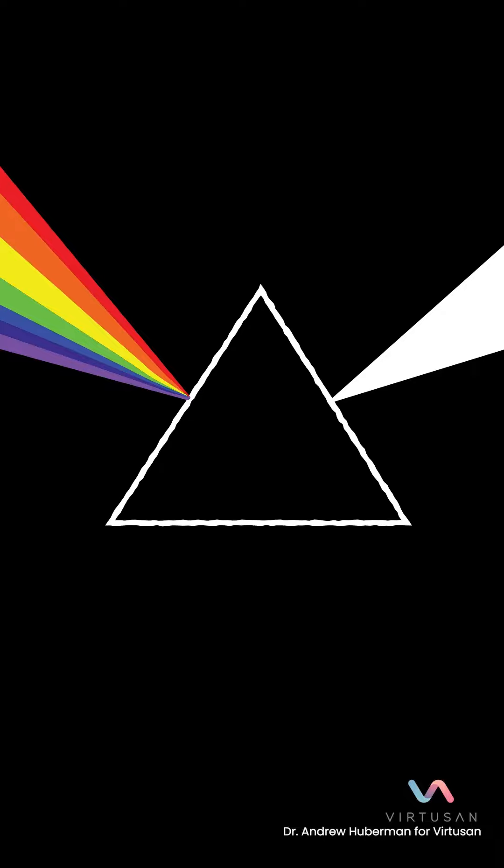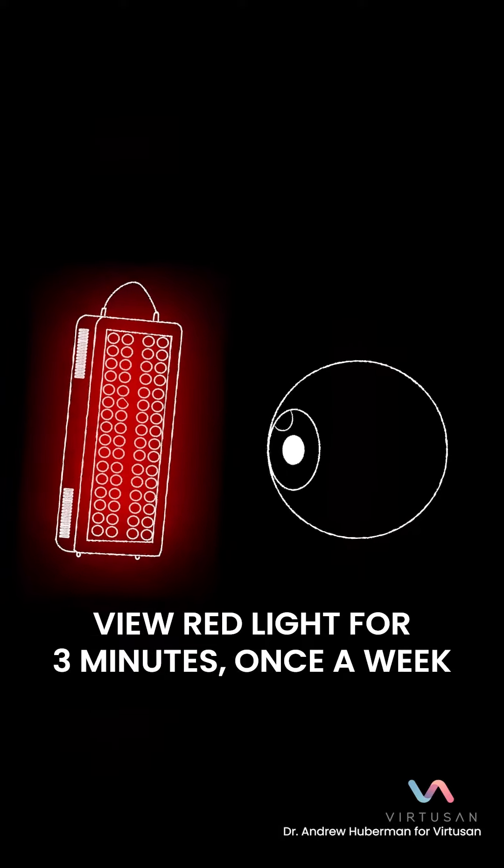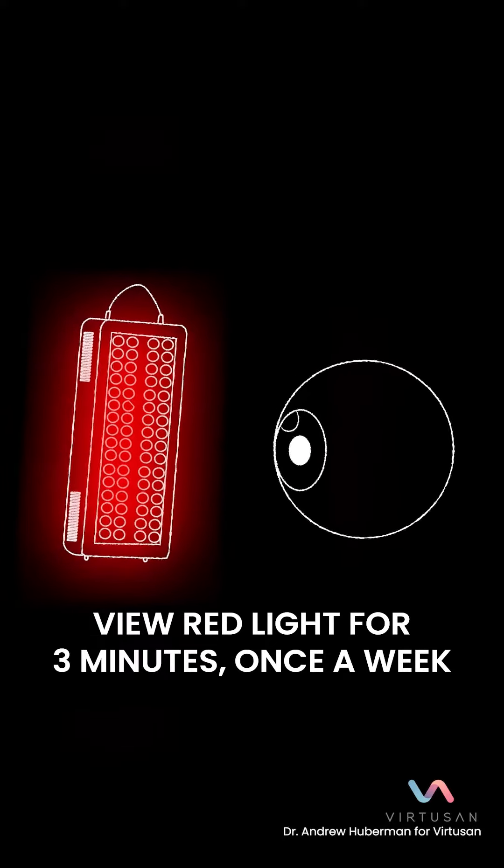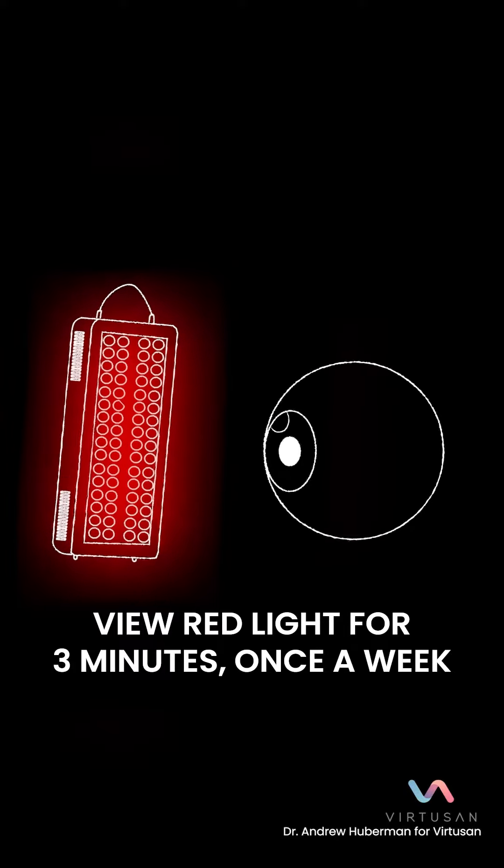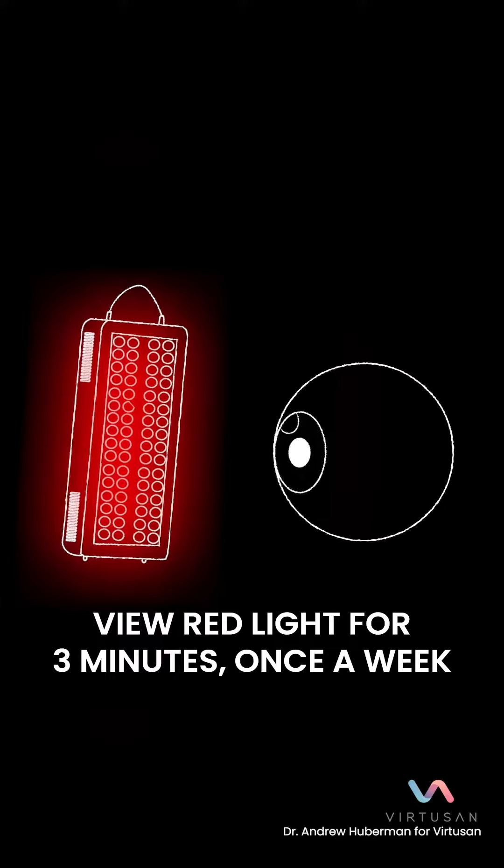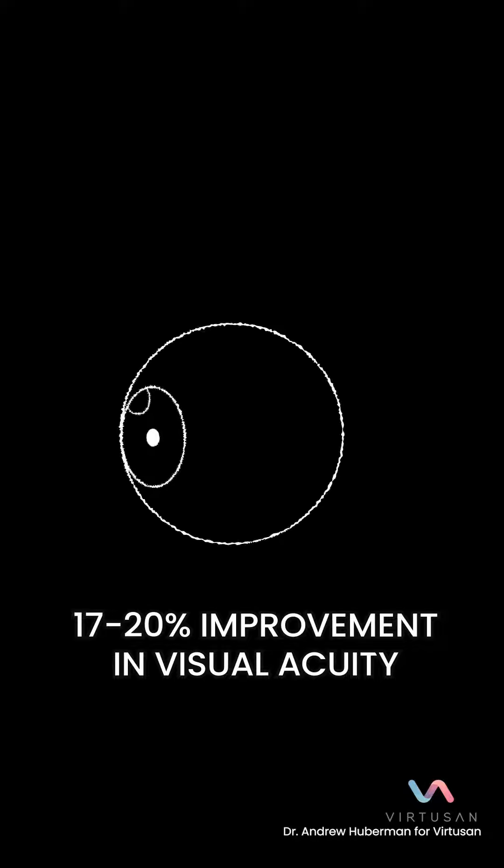How did this study use red light? They had people view red light for three minutes once a week. The red light they used was about 670 nanometers, although it's not so crucial that it be exactly 670. How did these people react? They had a 17 to 20% improvement in their visual acuity, which is their sharpness of vision. That is very significant.